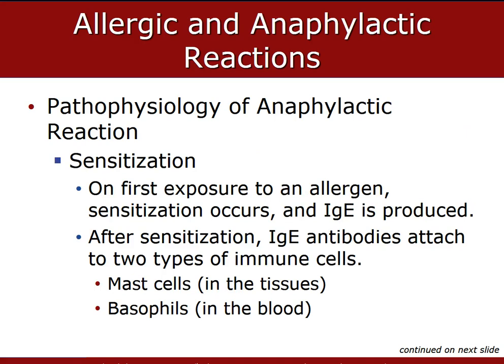Once sensitization occurs, the patient is primed for a possible anaphylactic reaction. It can take several exposures to a foreign substance over a long period of time to become sensitized. On your first exposure to the allergen, you produce what is known as IgE. After that sensitization, IgE antibodies attach to two types of immune cells — the mast cells, which are in the tissues, and the basophils, which are in the blood. You can remember that by B for blood, so basophils are in the blood. And mast cells are also in the tissue.